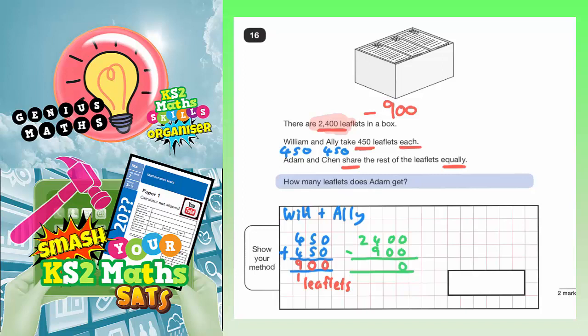0 take 0 is 0. 0 take 0 is 0. 4 take away 9 we can't do. So we need to borrow from the 2 and that becomes a 1. The 1 we've borrowed changes this 4 into 14. 14 take away 9 is 5. And then 1 take away 0 is 1.